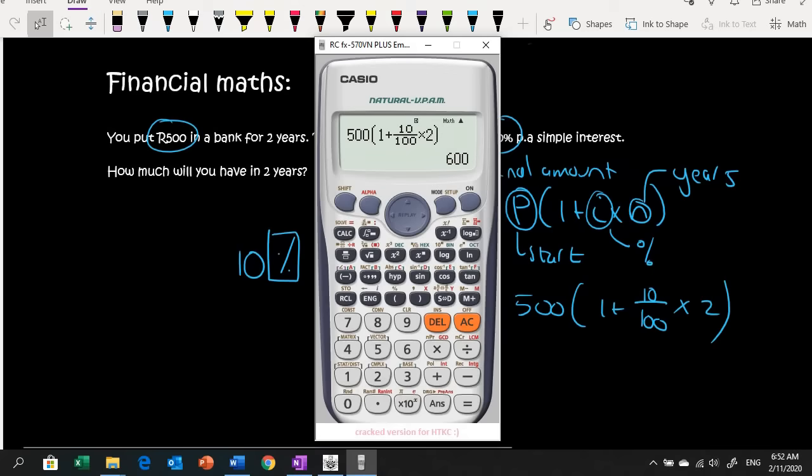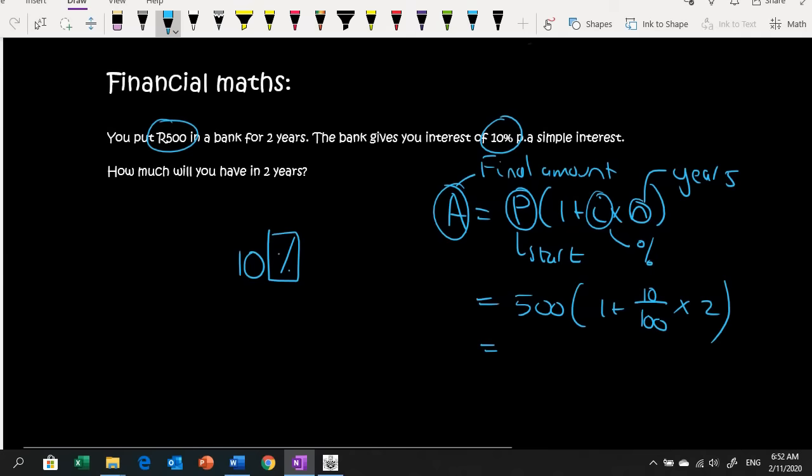Then you say times and then there's 2 years. Boom! 600 Rand. And that is exactly how much we had earlier.